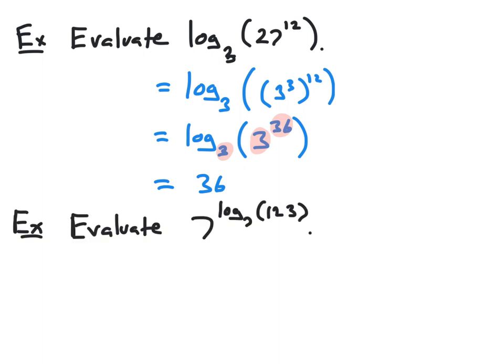For another example, let's evaluate 7 raised to the log base 7 of 123. We have an exponential of base 7 raised to the log base 7 of 123. The fourth property says the 7 and the log base 7 cancel out, leaving us with 123. We're raising 7 to the number defined as the exponent of 7 that gives 123, so by definition we get 123.